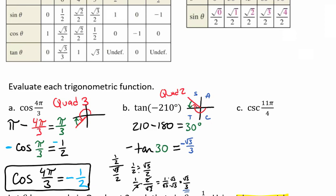I'm able to say that the negative tangent of 30 is going to give me the negative radical 3 over 3. I can say that the tangent of negative 210 degrees is going to be exactly negative radical 3 over 3.